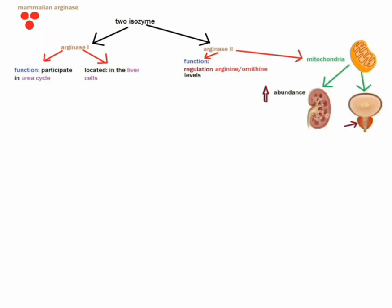The second isozyme, arginase 2, has been implicated in the regulation of intracellular arginine and ornithine levels. It is located in the mitochondria of several tissues in the body, with most abundance in the kidney and prostate. It may be found at lower levels in macrophages, lactating mammary glands, and brain. The second isozyme may be found in the absence of other urea cycle enzymes.